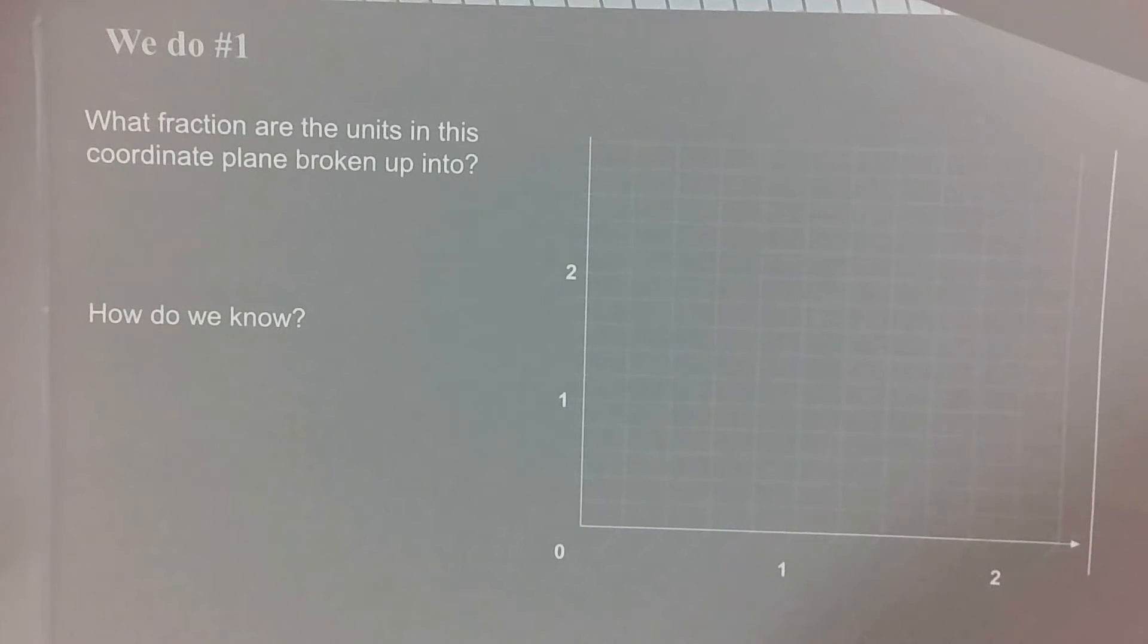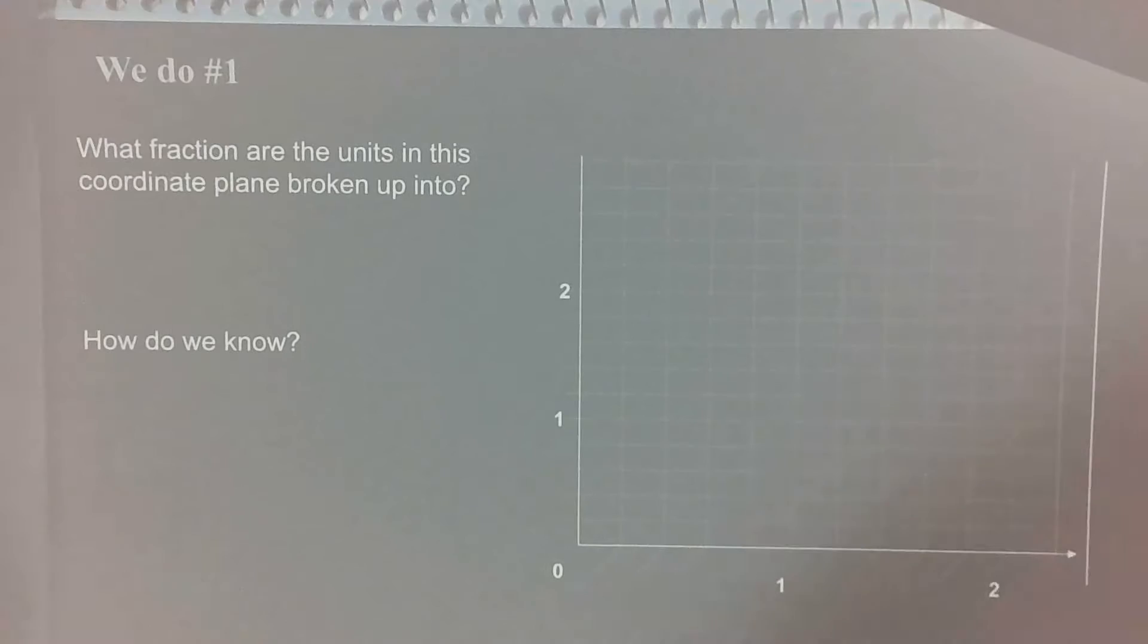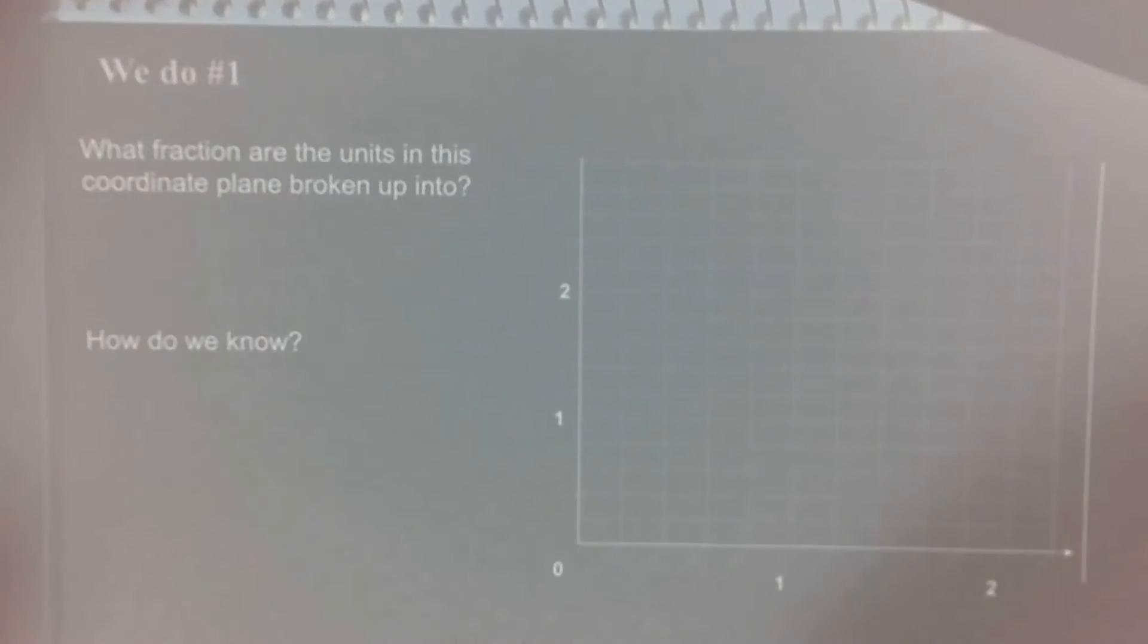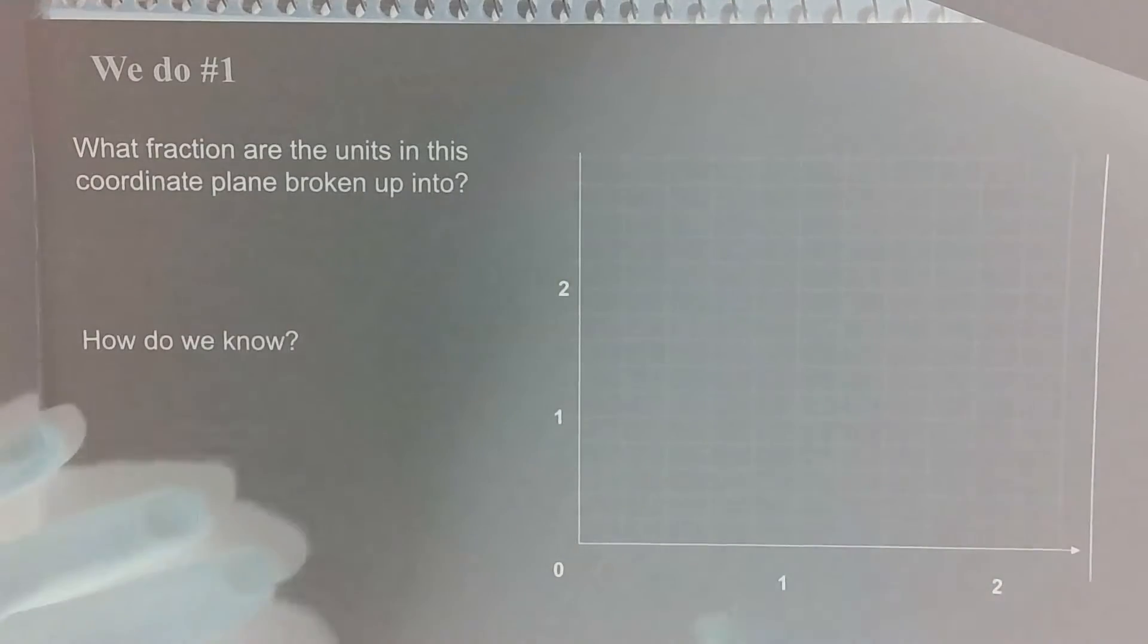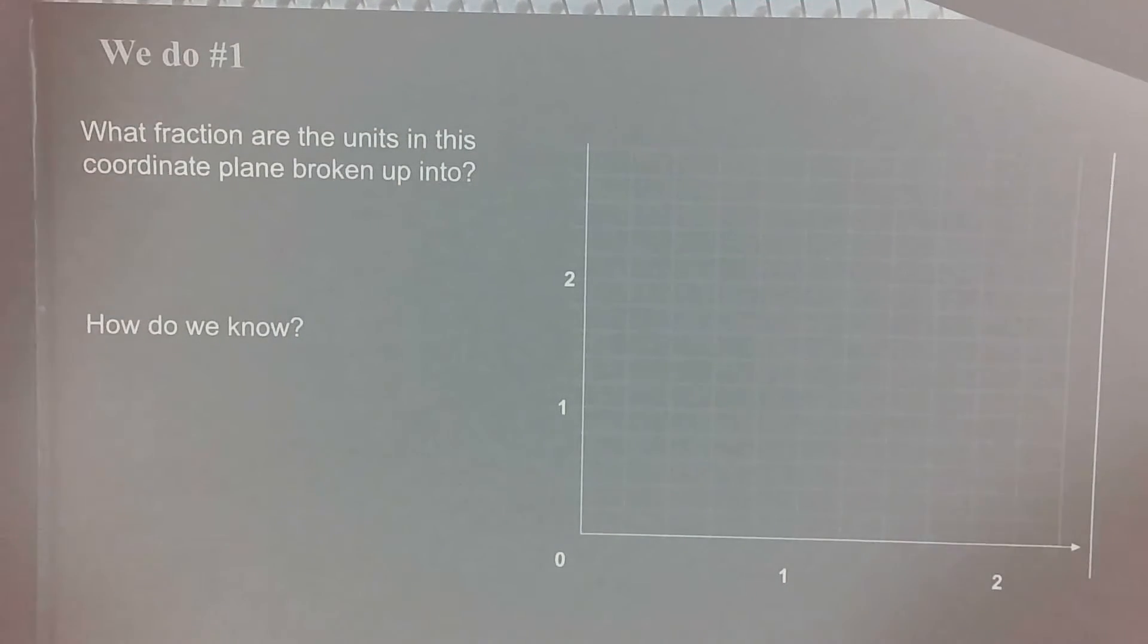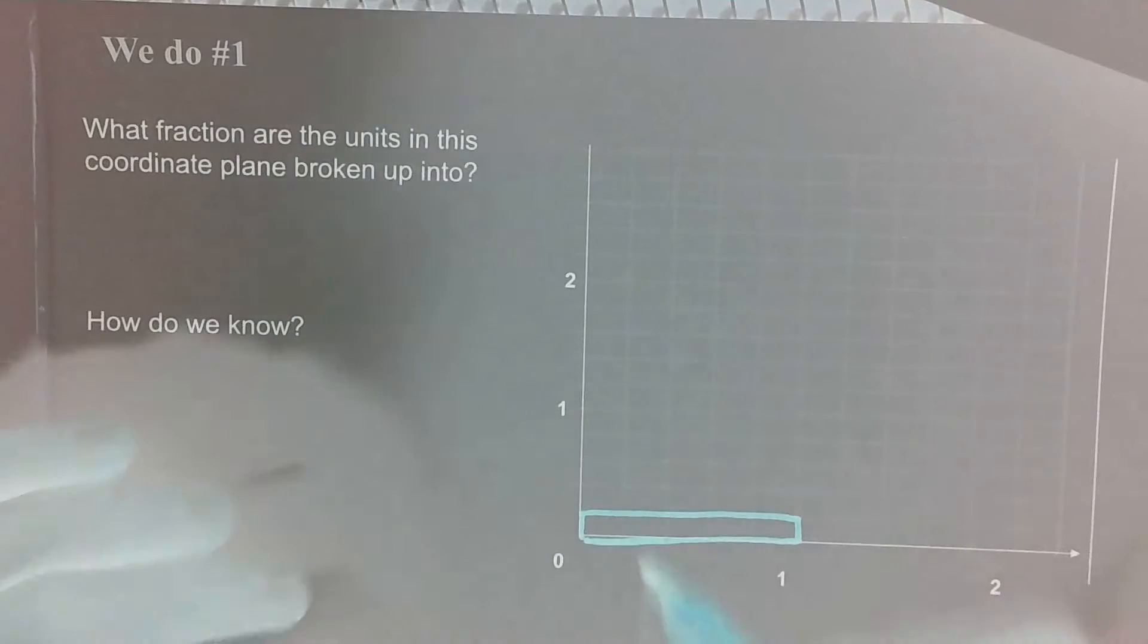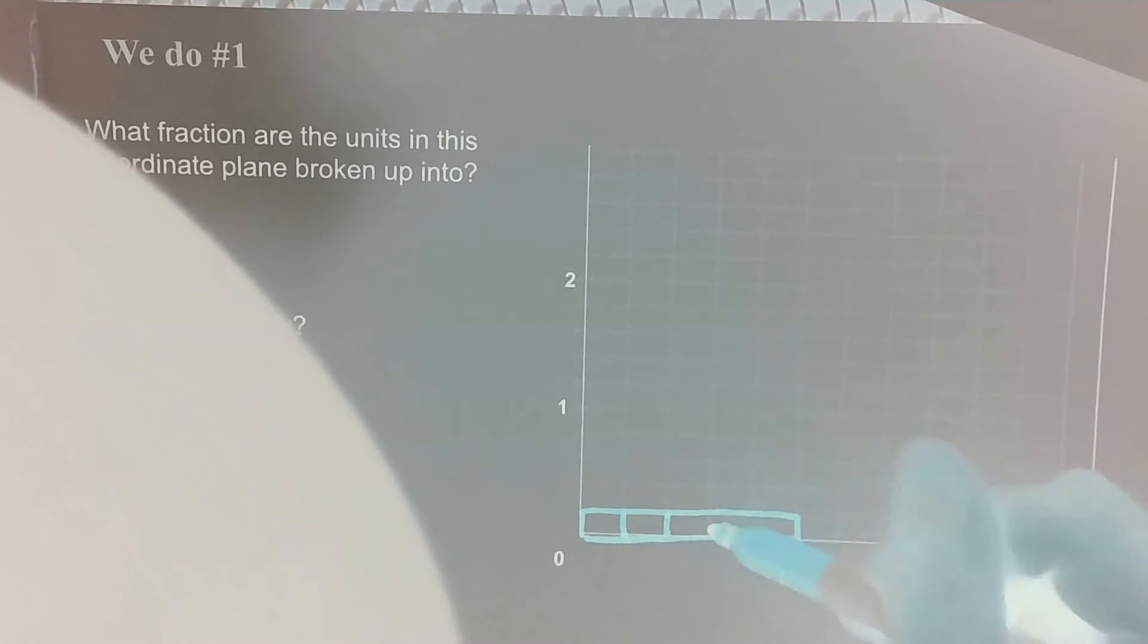Number one asks us what fraction are the units in this coordinate plane broken up into? So what is one unit worth? Well, let's find out. So we know that one unit isn't worth one because there's a whole bunch of units in here before our first one. So let's do what we did yesterday and between zero and one on our x-axis, let's turn these units into a little tape diagram and let's partition it right on the grid lines.